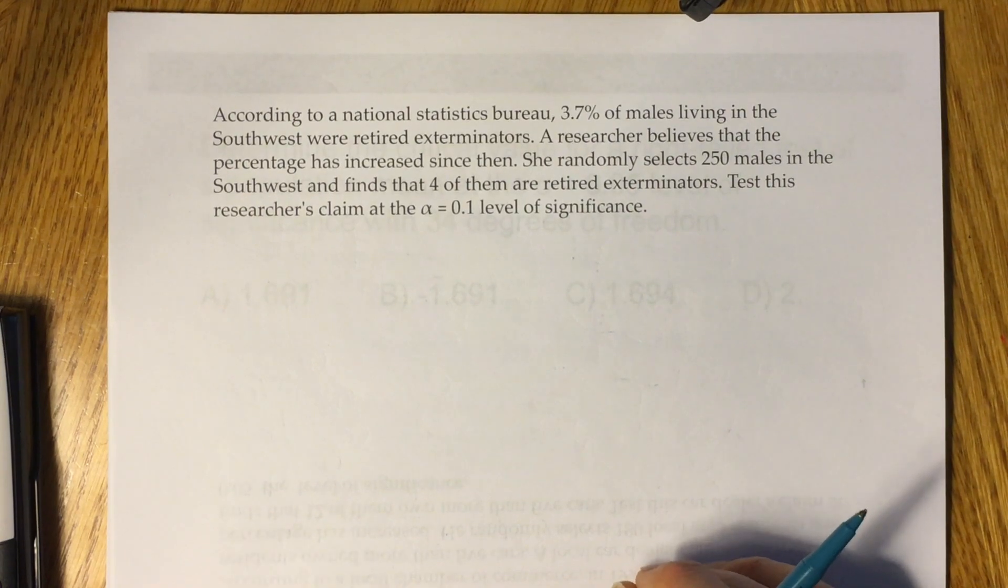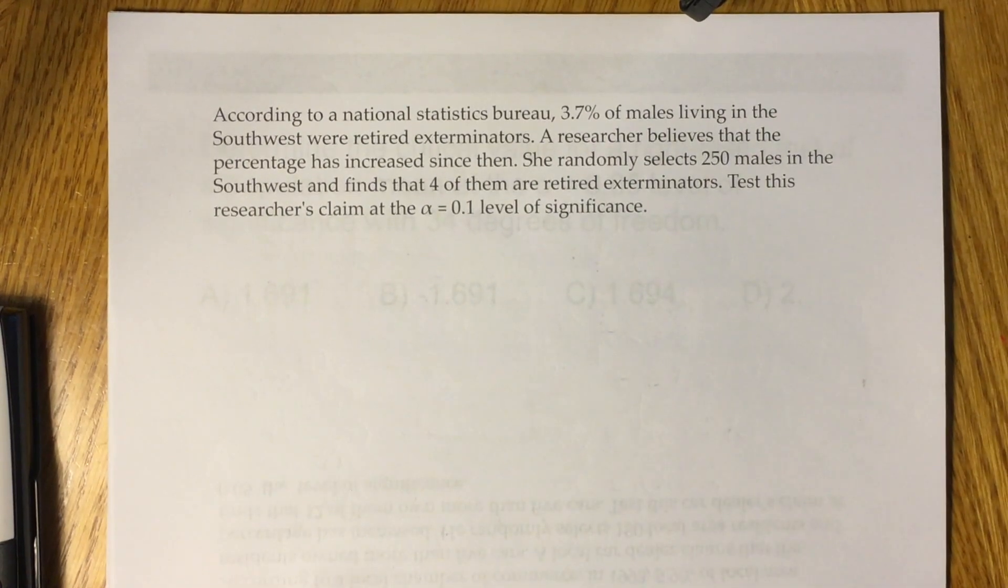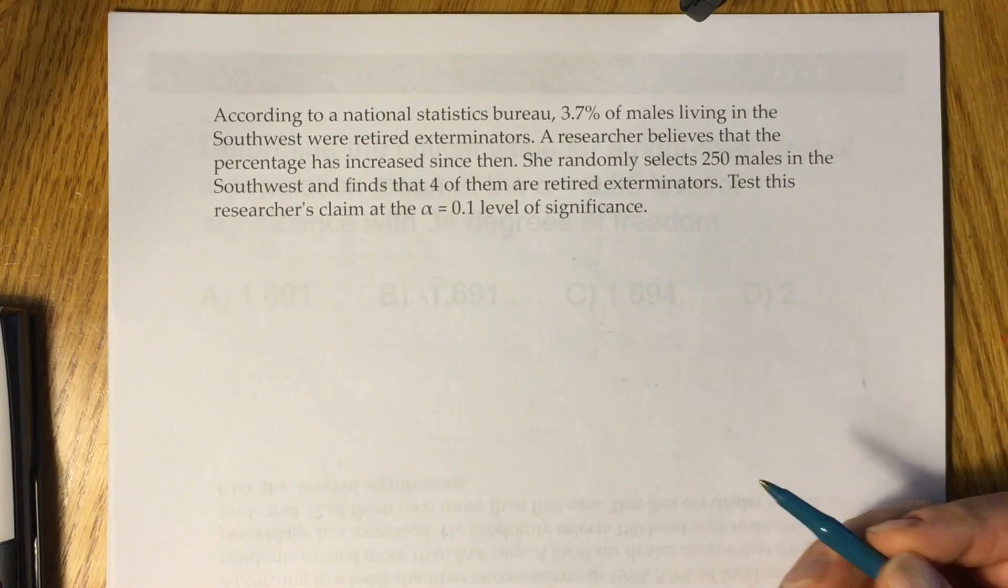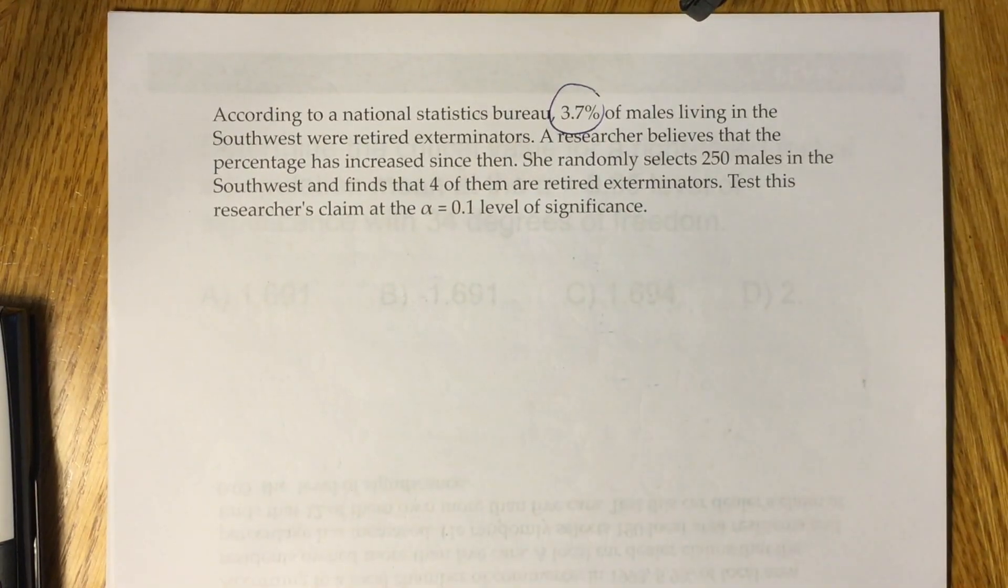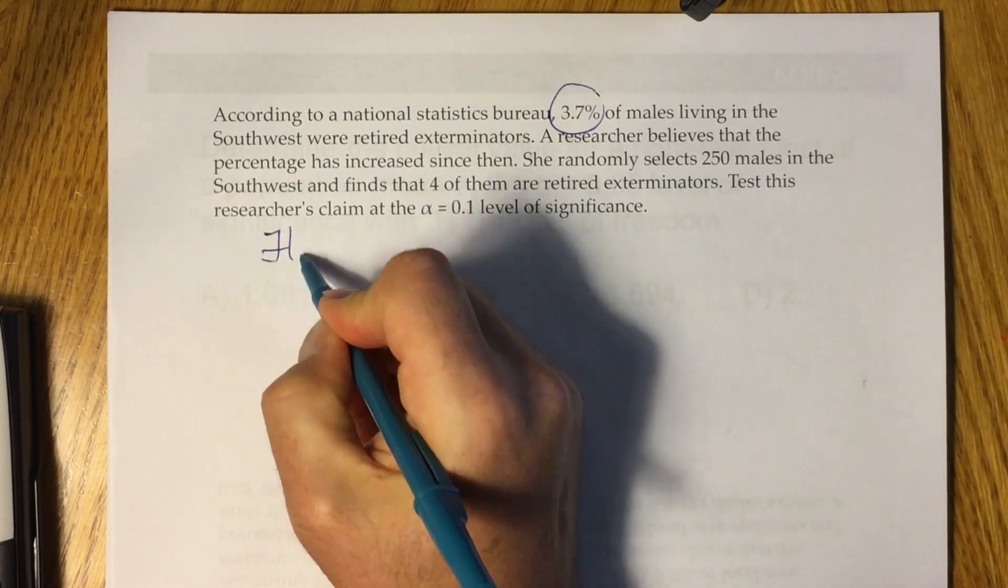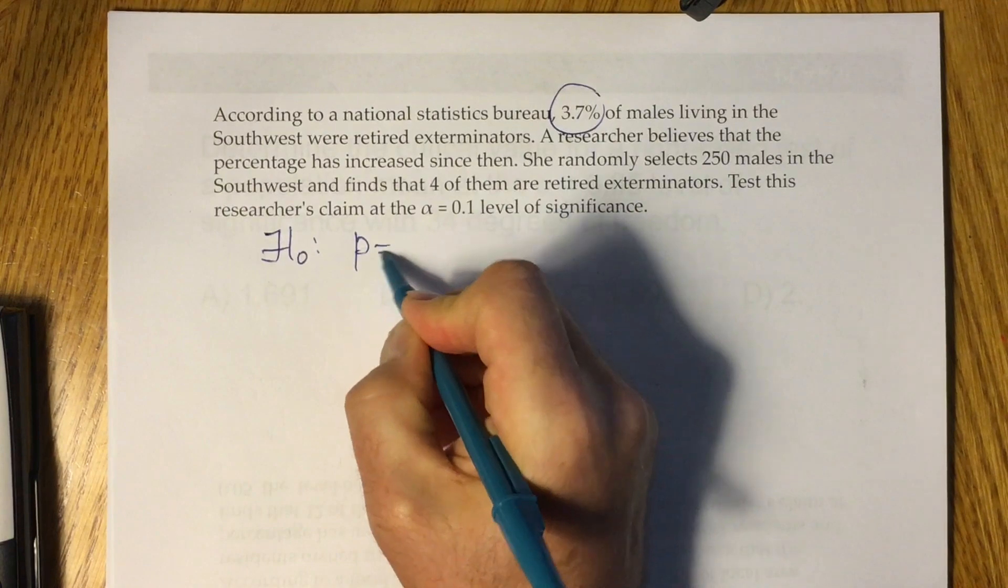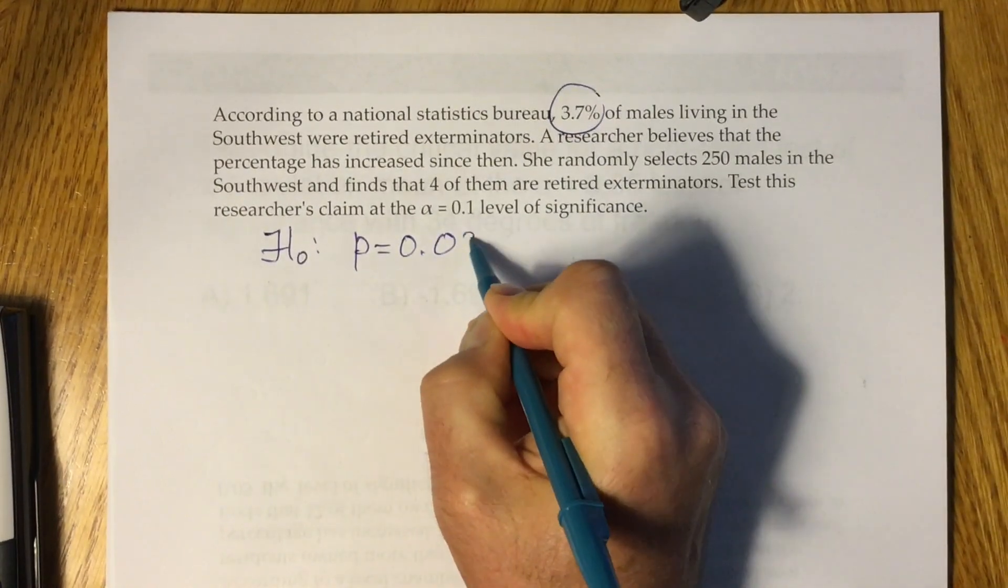So, as usual, we'll start by writing null and alternative hypothesis. Our parameter here is proportion because we are given 3.7% and this is nothing else as proportion. So null hypothesis is easy to write: P would be equal to 0.037.